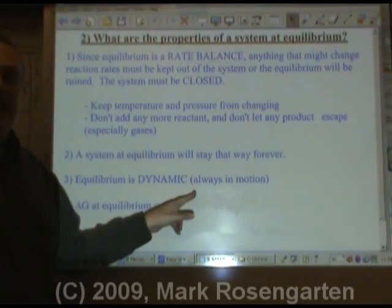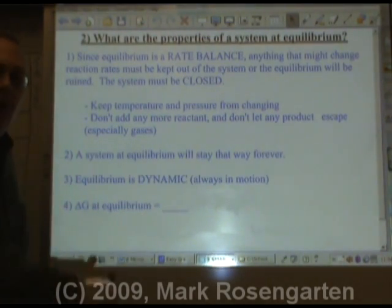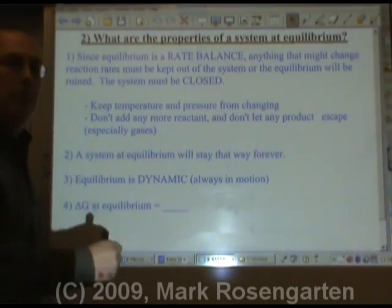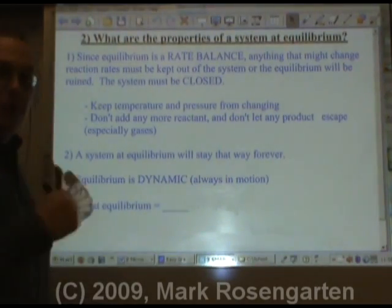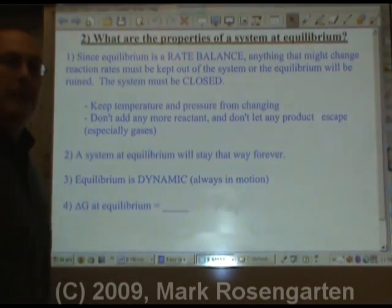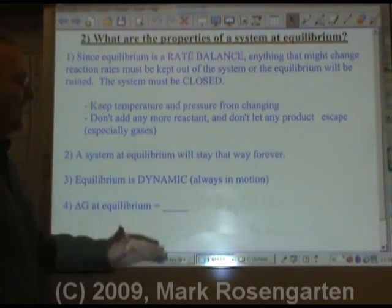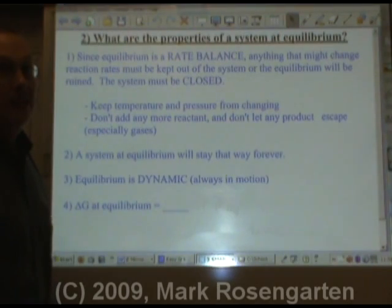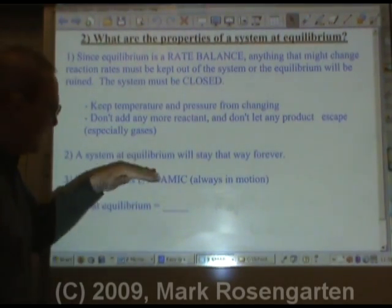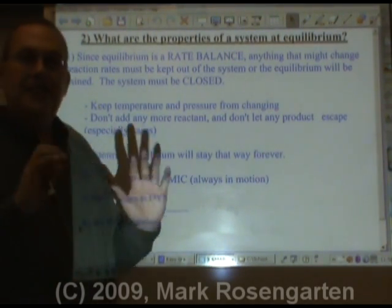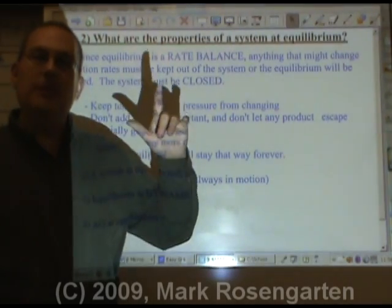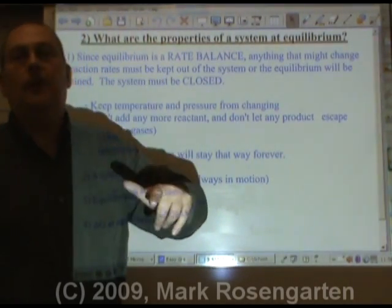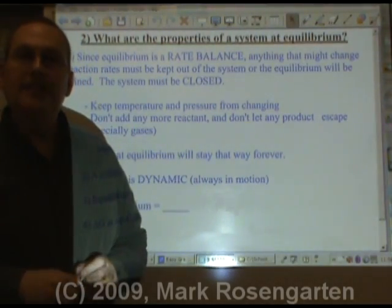It may not look like anything is happening, but when you're walking forward and the treadmill is going backwards, you're moving and it's moving. Even though it doesn't look like anybody's going anywhere, it's always in motion — it's dynamic. As soon as you stop moving, that treadmill is going to throw you off the back end. So you've got to keep moving, you've got to be dynamic. A system at equilibrium will stay at equilibrium forever, unless you do something to mess it up.